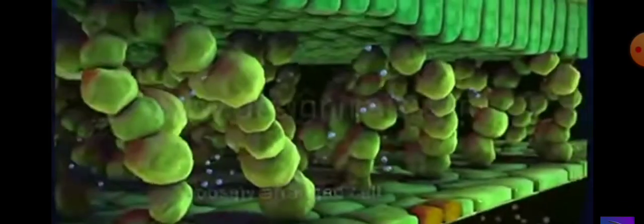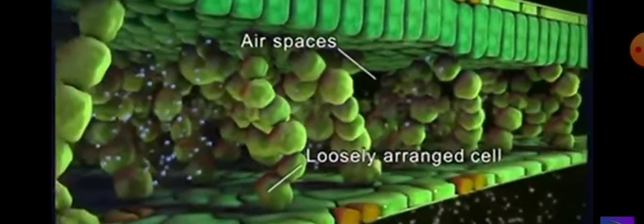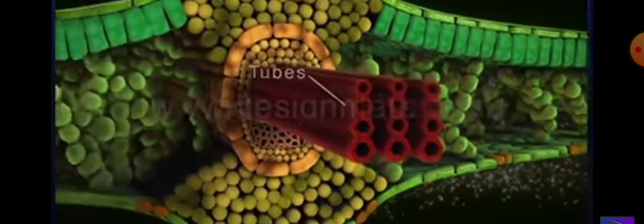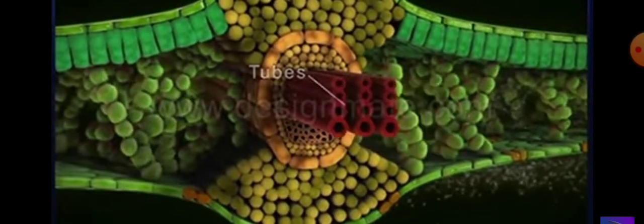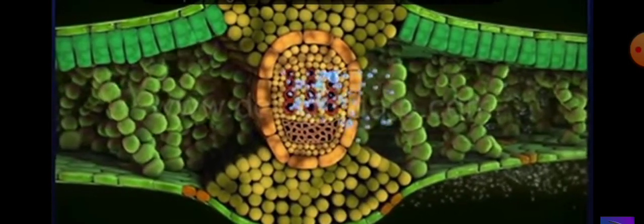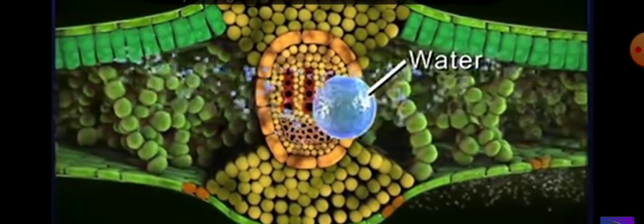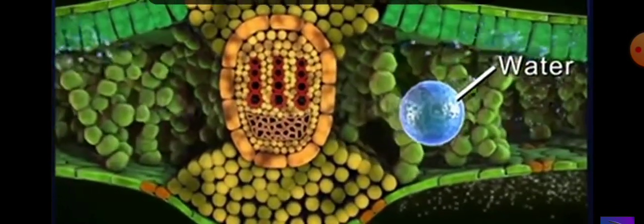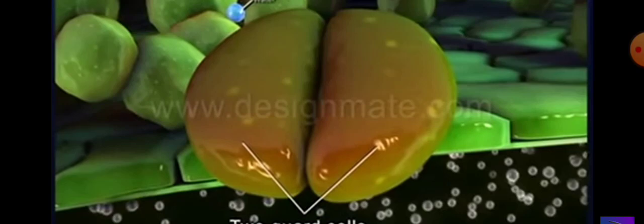The next layer has loosely arranged cells with large air spaces. The section also shows tubes specific for transporting the absorbed water into the leaves. The lower layer has many pores called stomata. Each stoma is surrounded by two guard cells, which regulate opening and closing of the stomata.